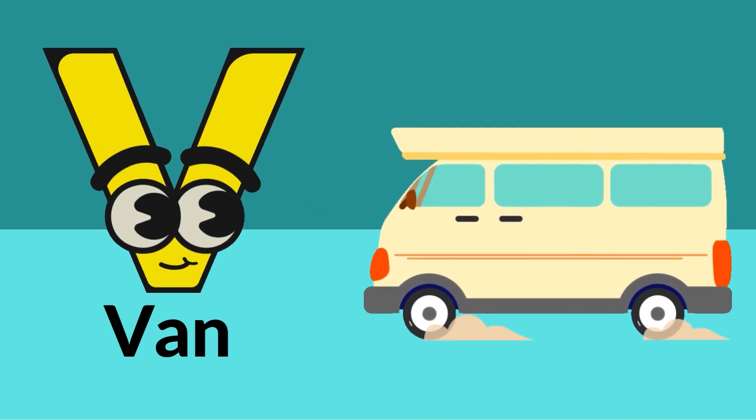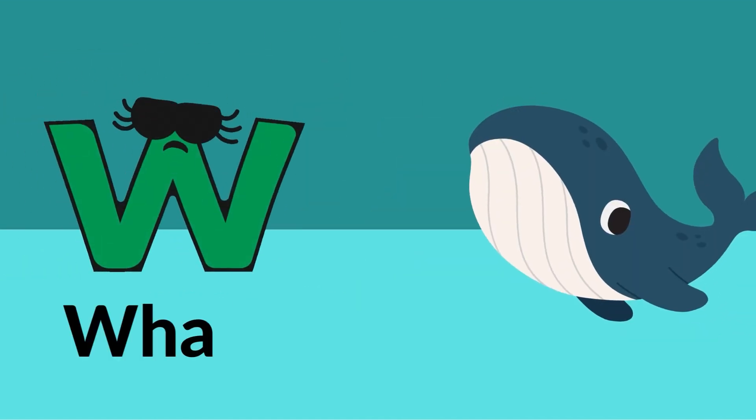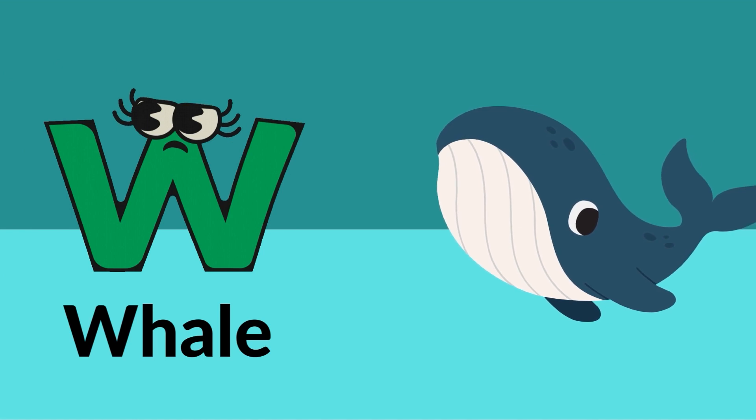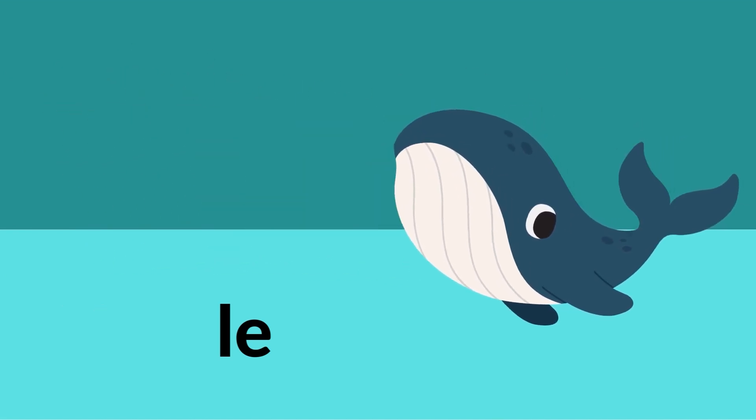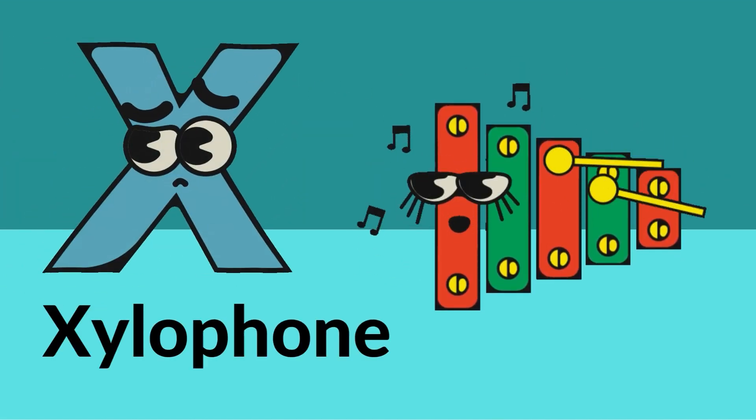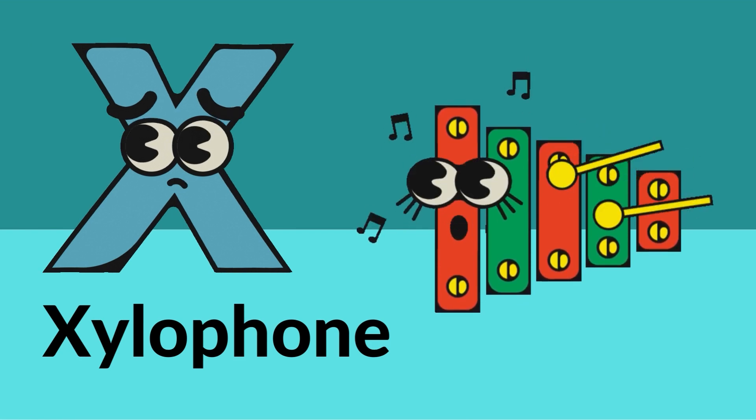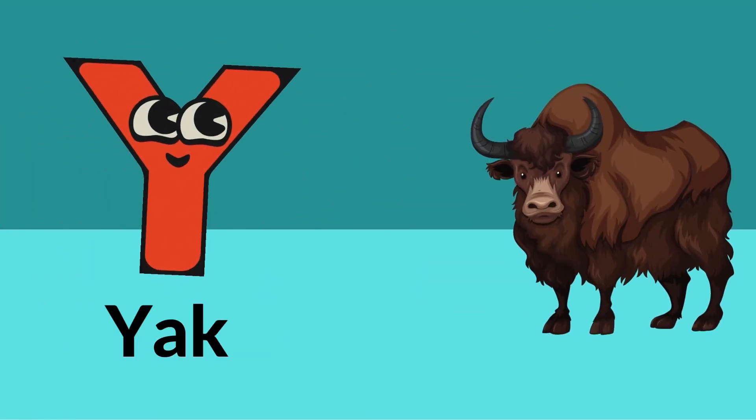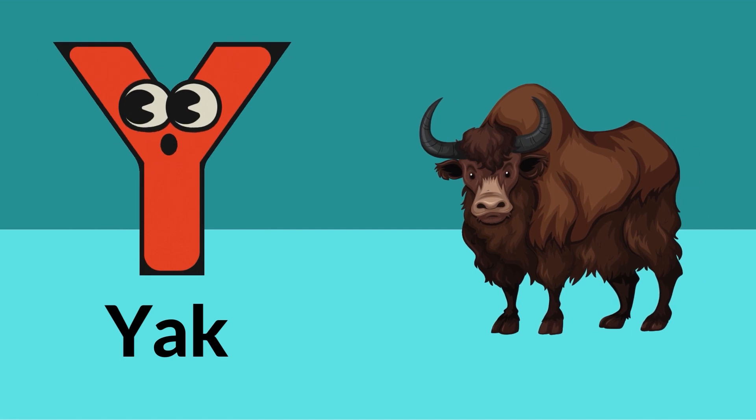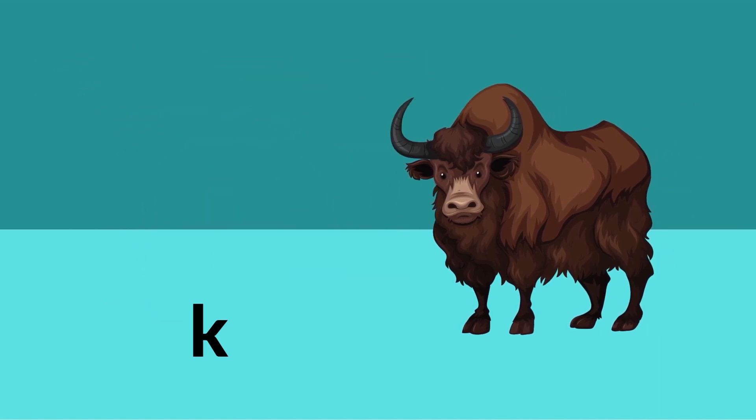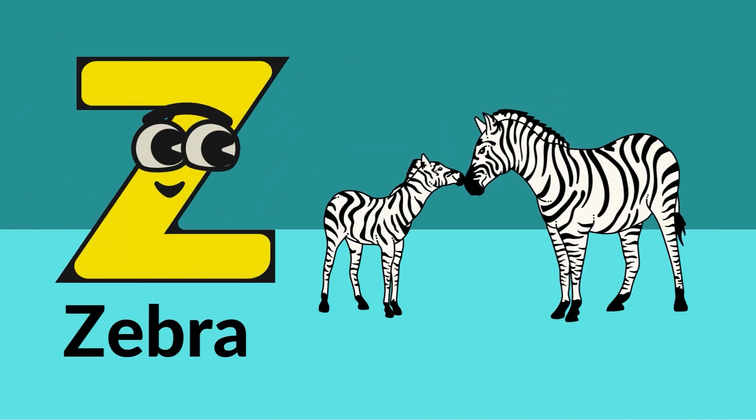W is for whale, X is for xylophone, Y is for yak, Z is for zebra. Thank you, Sarah.